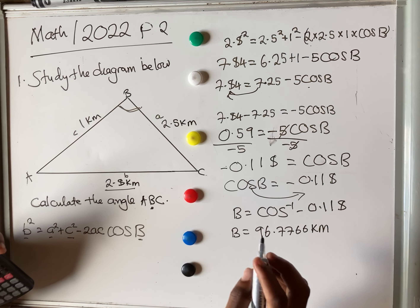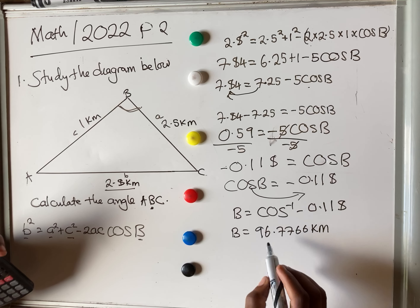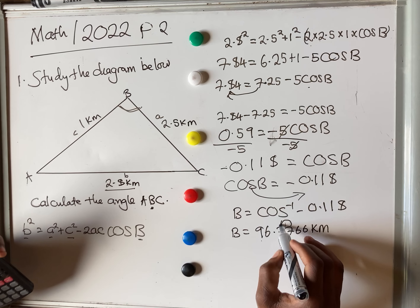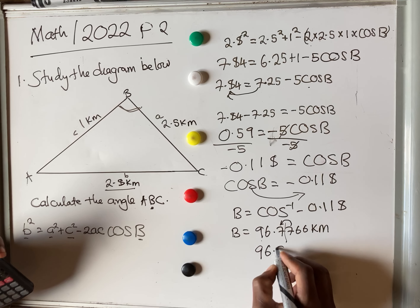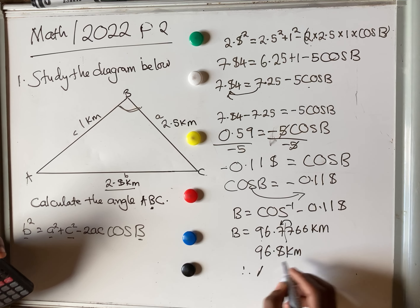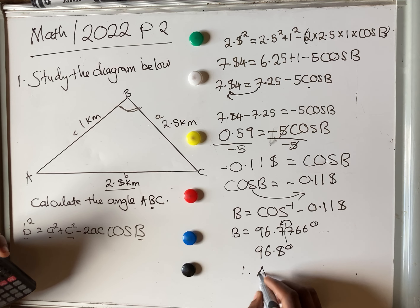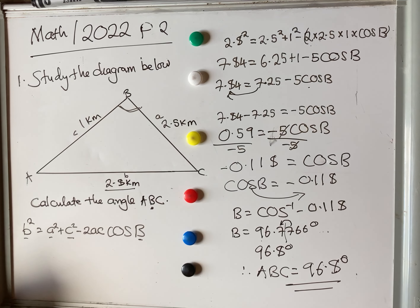Answers must always be left in three significant figures according to the instructions on the maths paper cover page. So counting three significant figures — one, two, three — the rounded digit is more than four, so we add one to get 96.80 degrees. Therefore, angle ABC = 96.80°. This is how we tackle this question; it is as easy as that. Solving this will earn you five marks. Thank you so much for watching — subscribe for more videos!